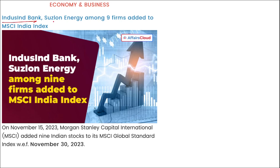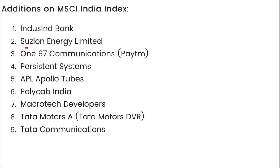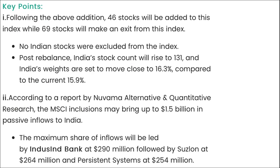Suzlon Energy and nine other firms were added to the MSCI India Index. MSCI stands for Morgan Stanley Capital International Index. The nine Indian stocks added include Suzlon Energy, Paytm (One97), Persistent Systems, EPL Apollo, Polycab, Macrotech Developers, Tata Motors, and Tata Communications. Following this addition, 46 stocks will be added to this index while 69 stocks will make an exit.